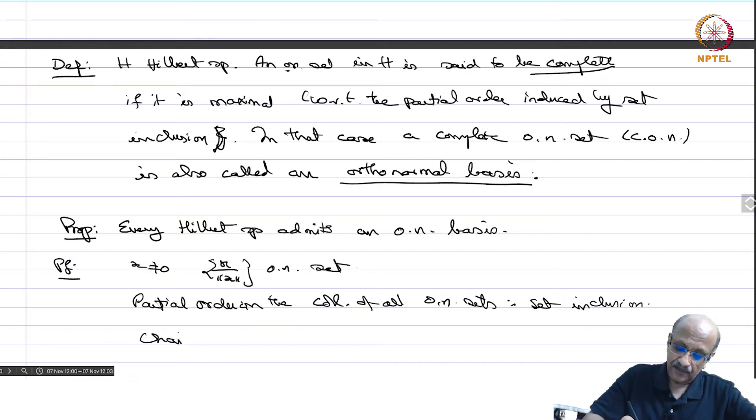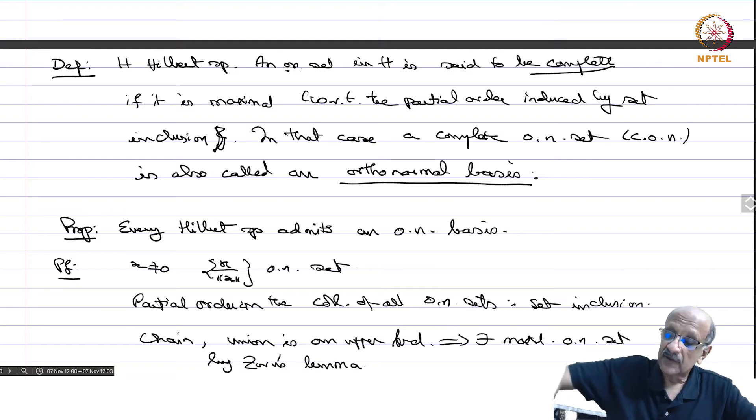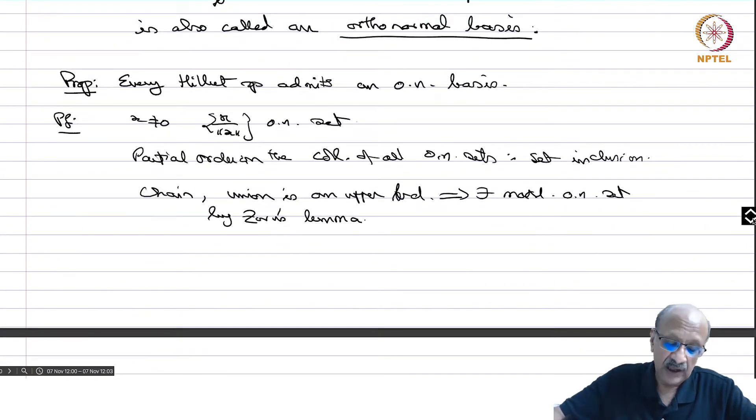Now you take any chain, then union is an upper bound. You take a chain that means any two elements of the thing simply take the union that is an orthonormal set and therefore that will give you an upper bound implies there exists a maximal orthonormal set by Zorn's Lemma.